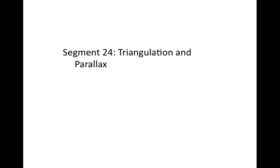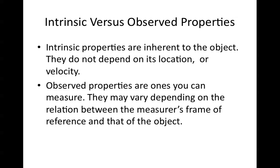We can measure the position on the sky with very high precision, but the radial distance eludes us. We need to do this because we want to be able to measure the intrinsic properties of objects. Intrinsic properties are inherent to the object and don't depend on its location or velocity. Observed properties, on the other hand, are ones you can measure — they may vary depending on the relationship between the measurer's frame of reference and that of the object, that is, where you are or how fast you're moving.